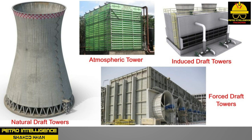In an atmospheric cooling tower, wind velocity activates the heat transfer process. In a natural draft cooling tower, temperature differences inside and outside the tower change the density of the air, and water vapor and air rise naturally up the chimney. Atmospheric towers initially have a crossflow airflow, whereas natural draft cooling towers can be arranged with crossflow or counterflow fill patterns.